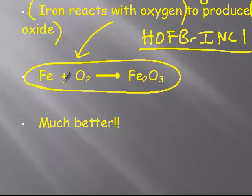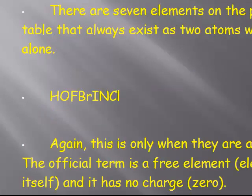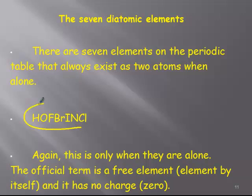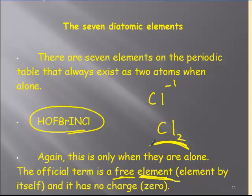Reactants are separated by plus signs, and if there are multiple products, they are also separated by plus signs. These are the seven Hofbrinkel elements: hydrogen, oxygen, fluorine, bromine, iodine, nitrogen, and chlorine — always diatomic when they are a free element. A free element means it's by itself with a zero charge. So chlorine forms a minus one ion in compounds, but free chlorine is always Cl2 with a zero charge.